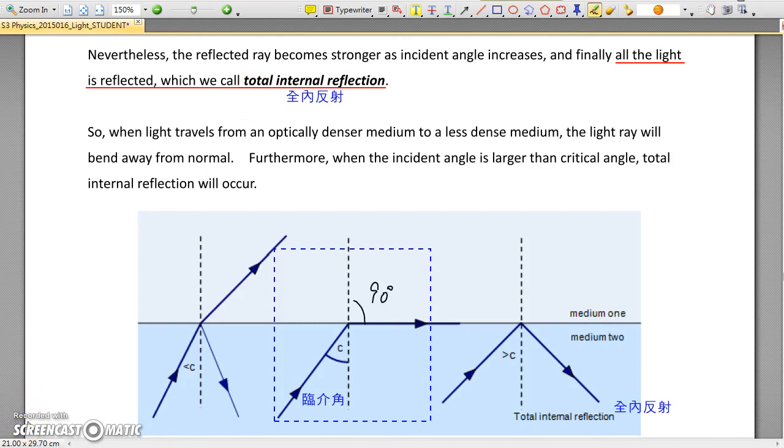It is indeed not too difficult to find the critical angle of glass. Let me show you how to do this. Let's take a look at the diagram in the middle.